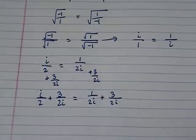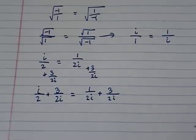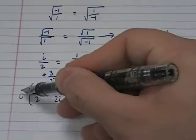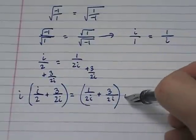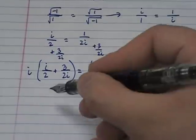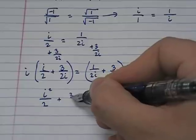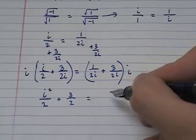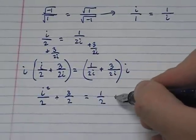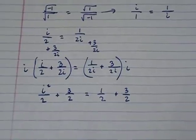And the next thing I'm going to do is multiply both sides by i. So I'm going to take this and multiply by i, and I'm going to take this and multiply by i. If I do that, what I end up with is i²/2 + 3/2 = 1/2 + 3/2.